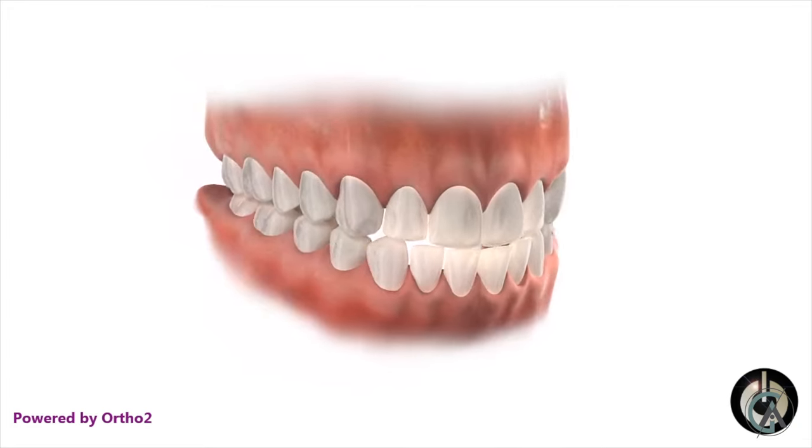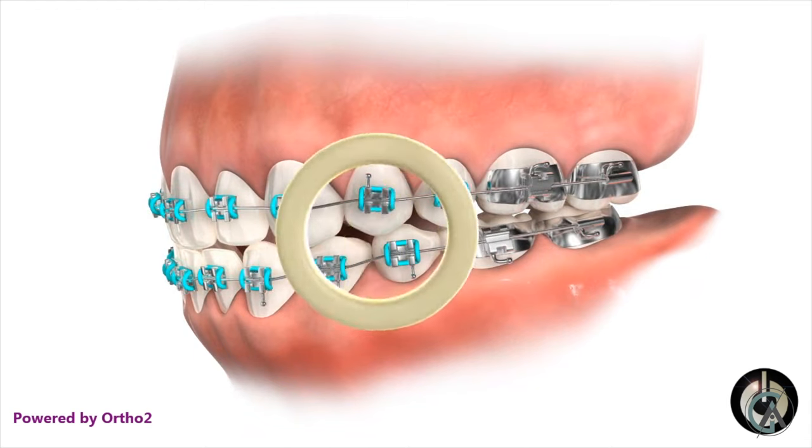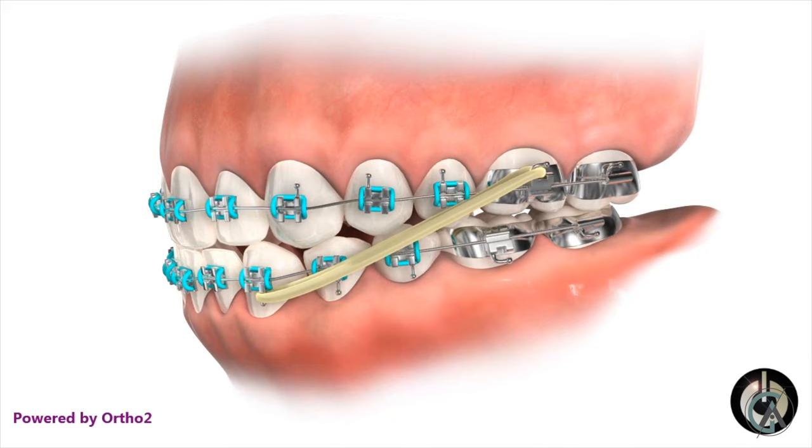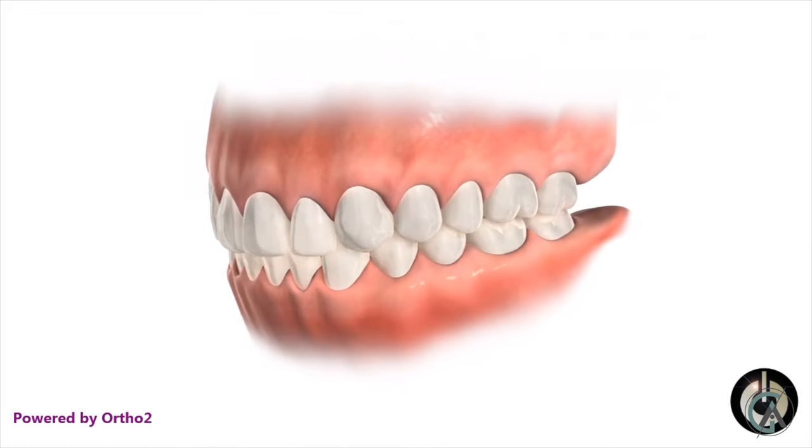On the flip side, elastic pattern number four is Class 3 elastics, used to fix a Class 3 bite where your lower teeth are ahead of your upper teeth — essentially a mild underbite. In this case, your orthodontist might have you wear Class 3 elastics, which attach from your upper molars to your lower canines. This effectively pulls the lower teeth back and pushes the upper teeth forward to achieve a positive overbite and overjet so your upper teeth are in front of and over your lower teeth.